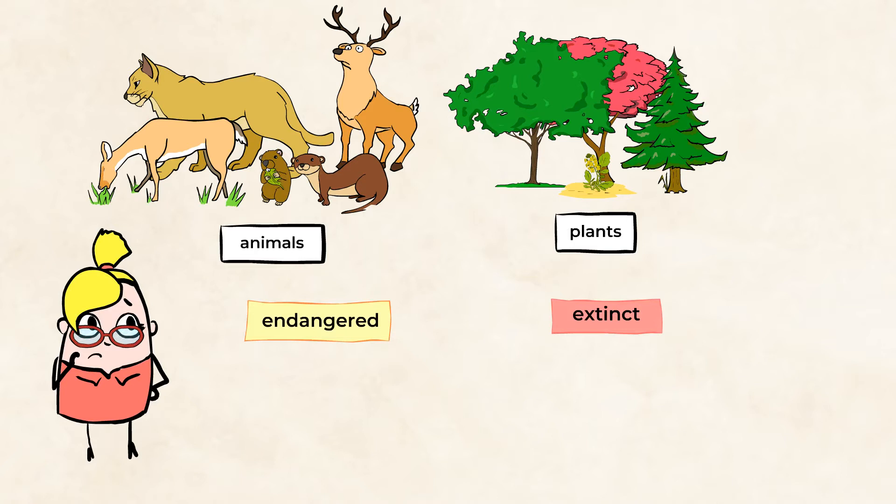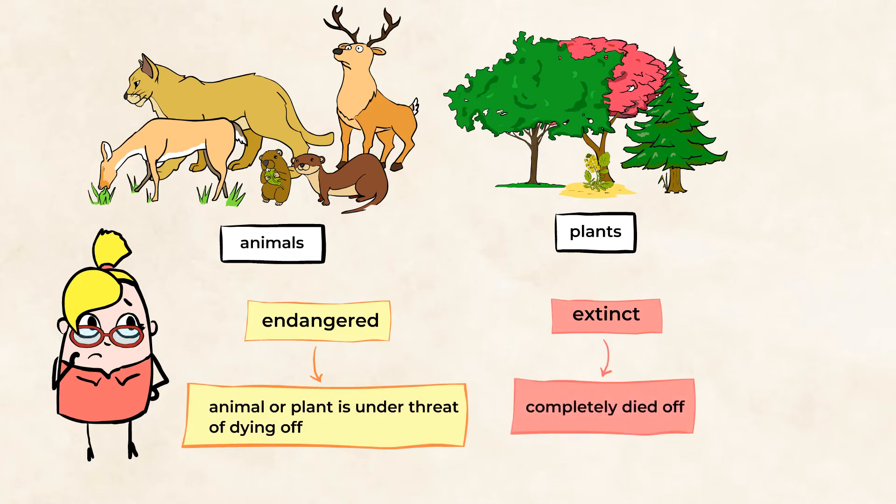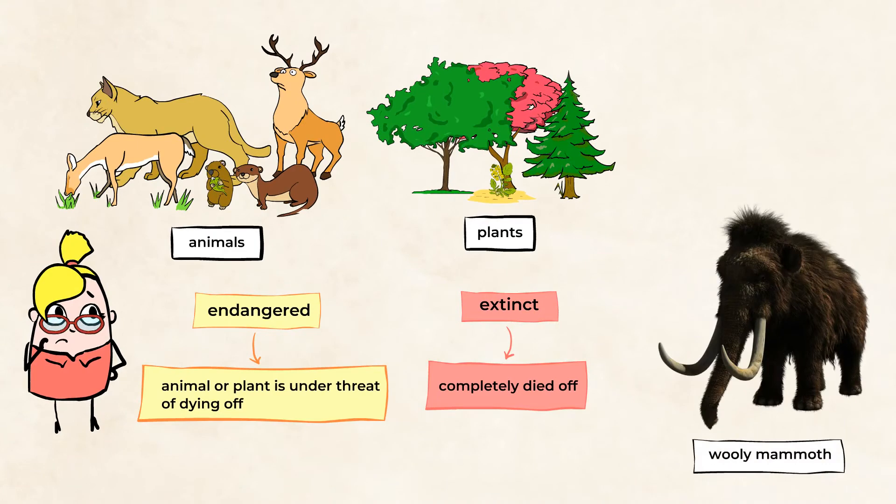Check the difference here. An endangered animal or plant is under threat of dying off, while an extinct one has completely died off already. Like the woolly mammoths.